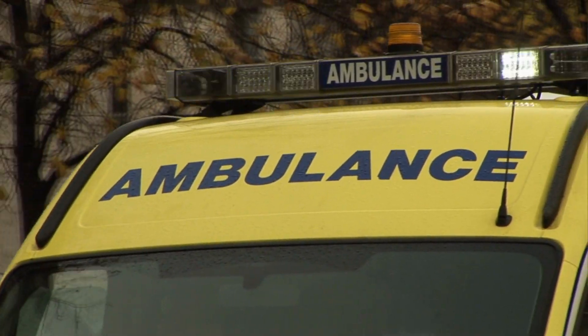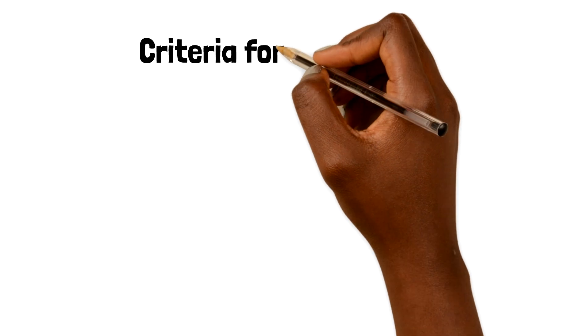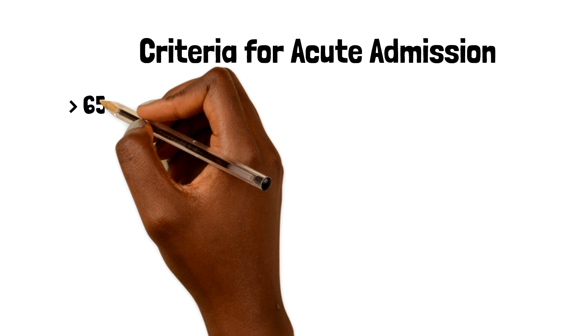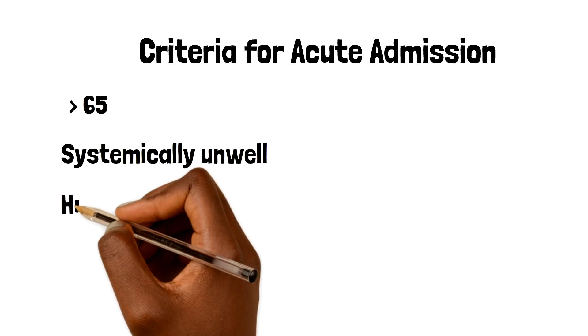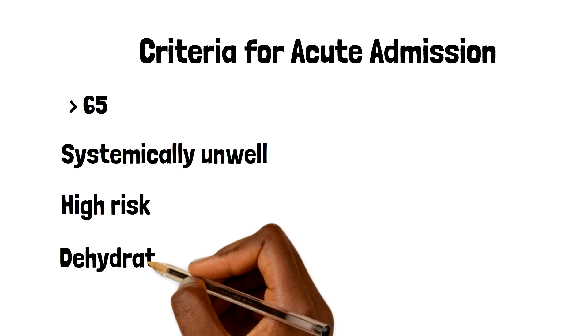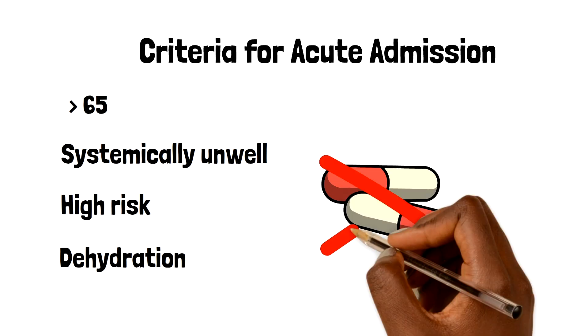If we are concerned or thinking about diverticulitis, there are several factors we need to consider in order to decide if the patient needs to go into hospital as an acute admission. Some of our criteria in which we have a lower threshold for arranging an acute admission involves those patients who are over the age of 65, those who are systemically unwell, those that are high risk due to comorbidities such as immunosuppressed patients, those with signs of dehydration or those at high risk of dehydration, and of course those who are unable to tolerate oral antibiotics.